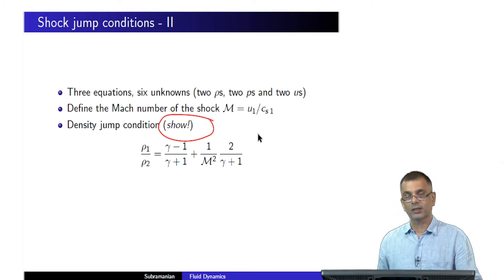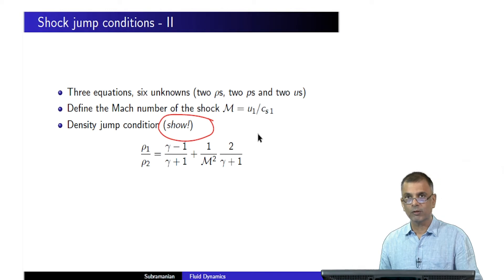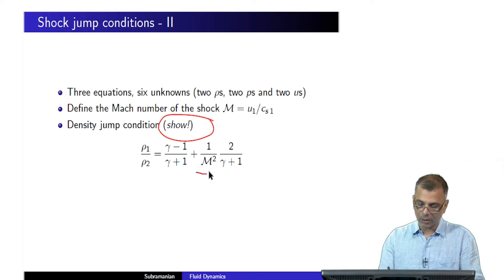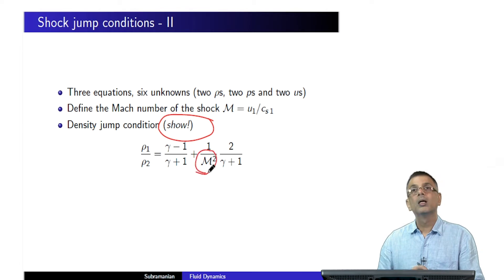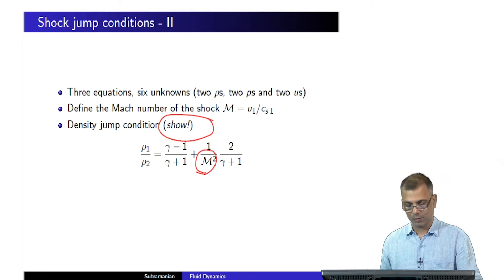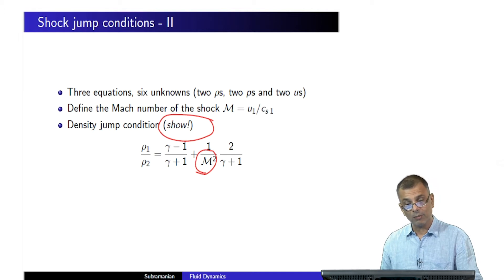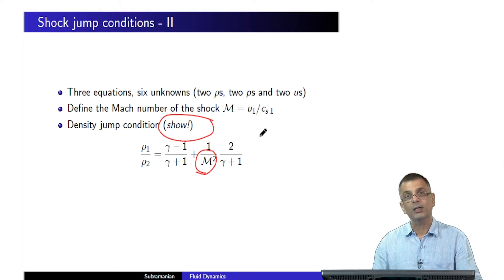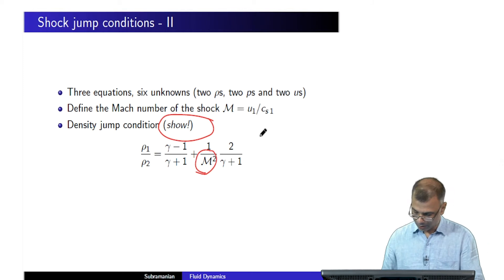What characterizes the fluid flow? There's only one quantity: the Mach number. It is the only thing that appears in the jump condition, and it is inversely proportional to the Mach number. So the larger the Mach number, the smaller the density jump; the smaller the Mach number, the larger the density jump. This is the density jump condition.